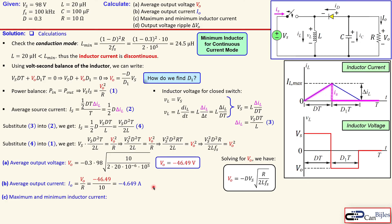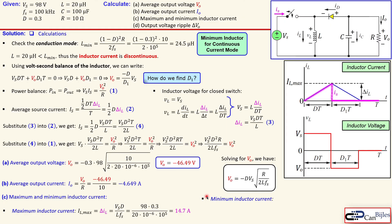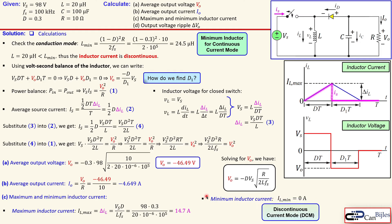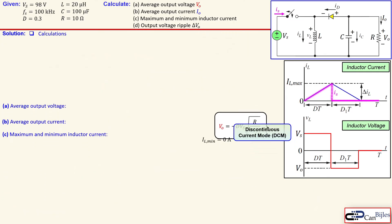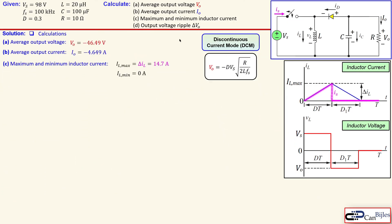The maximum inductor current is simply delta IL. Substituting the values gives 14.7 amps. The minimum inductor current is zero because we are in discontinuous current mode, as shown in the waveform graph. Let's collect these results and continue with the output voltage ripple.